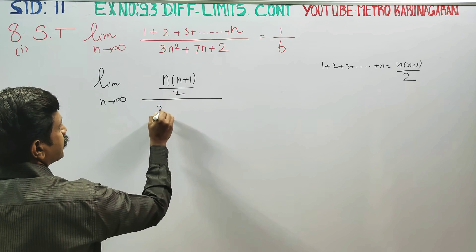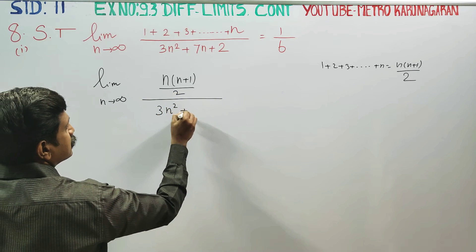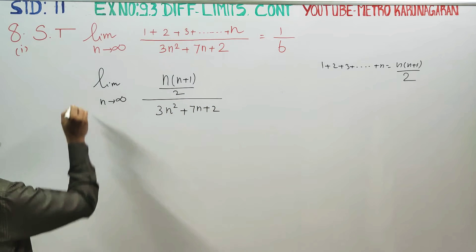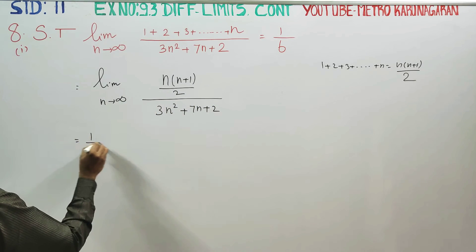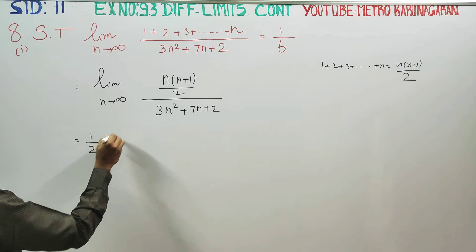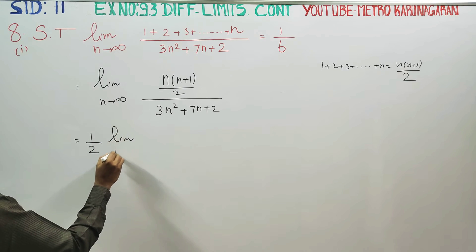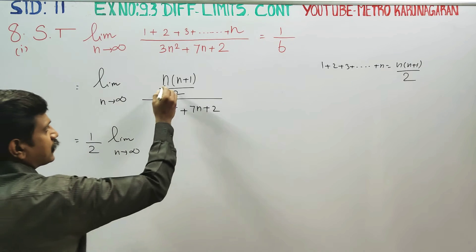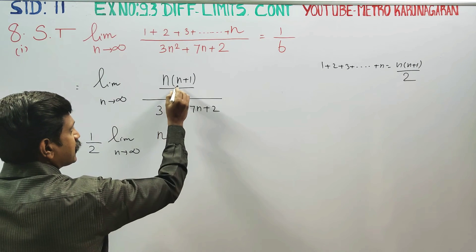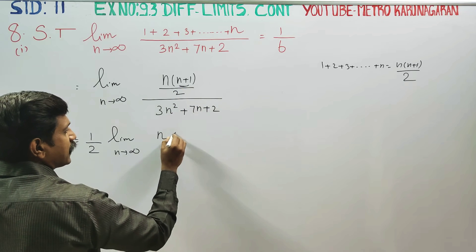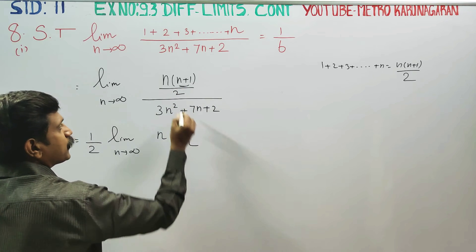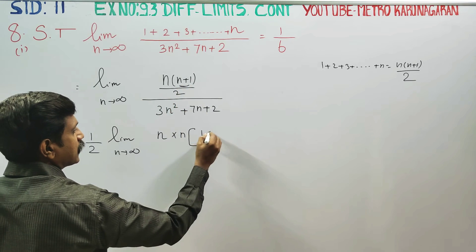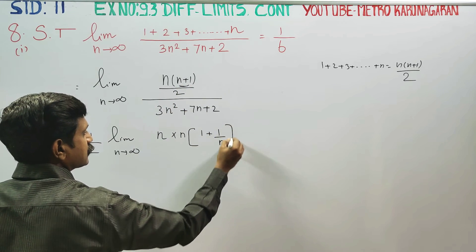This is divided by 3n square plus 7n plus 2. In the limit, numbers are constant. Limit n turns to infinity — I have to show that n is something different. The question is: what will happen? This bracket means one n is the main one, right.